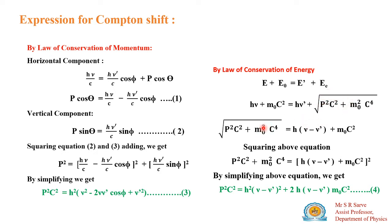Take the square root term on one side and the remaining terms on the other side. In order to remove this square root, we square this equation. By squaring, the square root gets cancelled. The term h mu minus mu dash plus m0 c squared becomes a complete whole square. If you simplify using the identity (a plus b) whole squared equals a squared plus b squared plus 2ab, the m0 squared c to the power 4 term cancels from both sides, and we obtain the expression for p squared c squared: p squared c squared equals h squared times (mu minus mu dash) whole squared plus 2h mu mu dash m0 c squared.